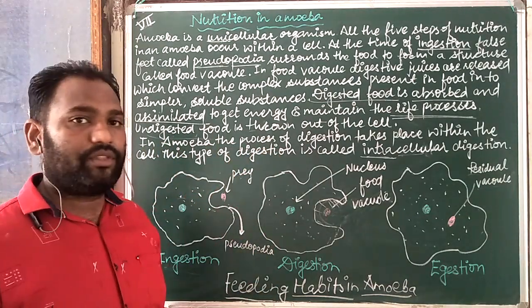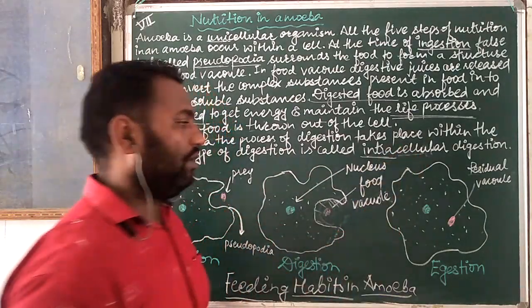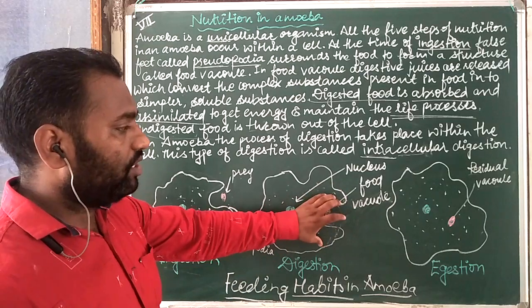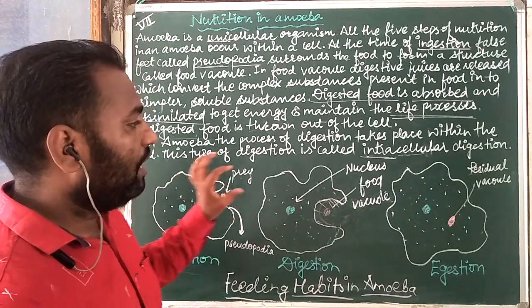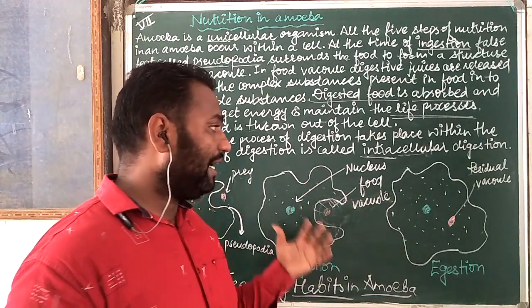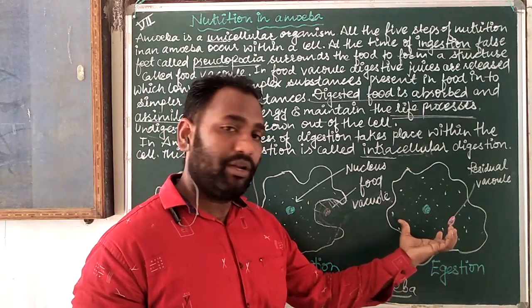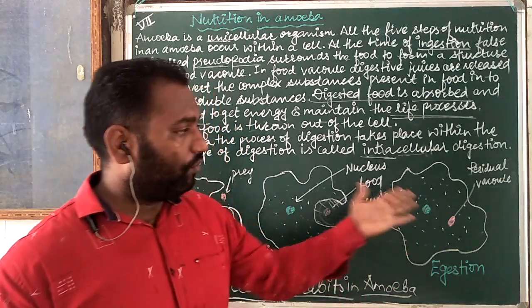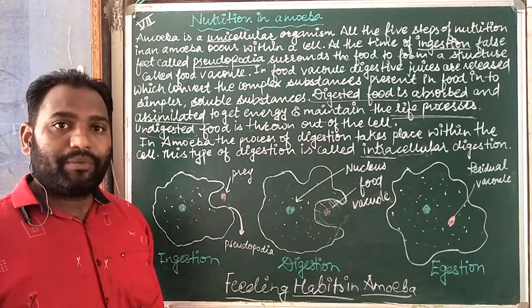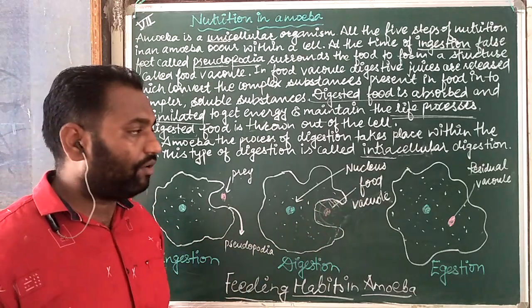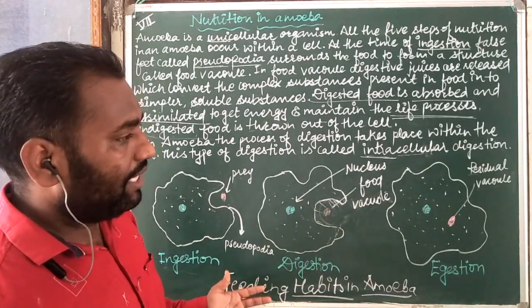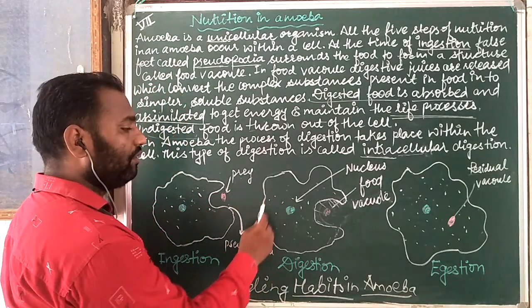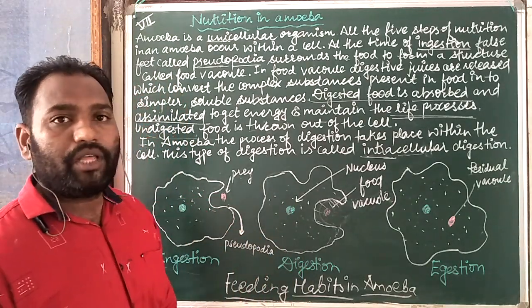Undigested food is thrown out of the cell. Intracellular digestion is important to understand. The prey serves as food, food vacuoles form due to pseudopodia, and when food vacuoles get inside, they break down complex substances into simpler ones. Residual vacuoles containing unwanted, undigested food are thrown out of the cell from any part of the external body.